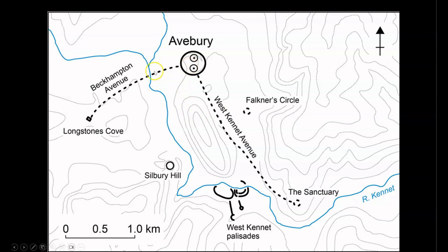Here you can see Beckhampton Avenue leading to a site known as Longstone Cove that features two massive stone pillars known as the Adam and Eve stones. The exclusive footage of the Adam and Eve stones, along with a full explanation of how this system works, will be upcoming as a special thank you to the supporters of the Land of Chem members only channel. If you'd like to check that out, I'll put a link in the video description below.